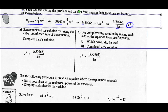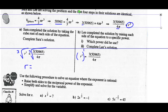Sarah completed the solution by taking the cubed root of each side of this equation and came up with the radius. Go ahead and use the calculators to figure out what that is. Lee completed the solution by raising each side of the equation to a specific power. What power did he use? Lee would have used the power one-third, because our exponent root laws say that r cubed, all to the exponent of one-third — we keep our base of r and multiply 3 times one-third. 3 times one-third is 1, and that's what we want: r to the first. So whatever I do to the left side, I must do to the right side — take that to the exponent of one-third as well.